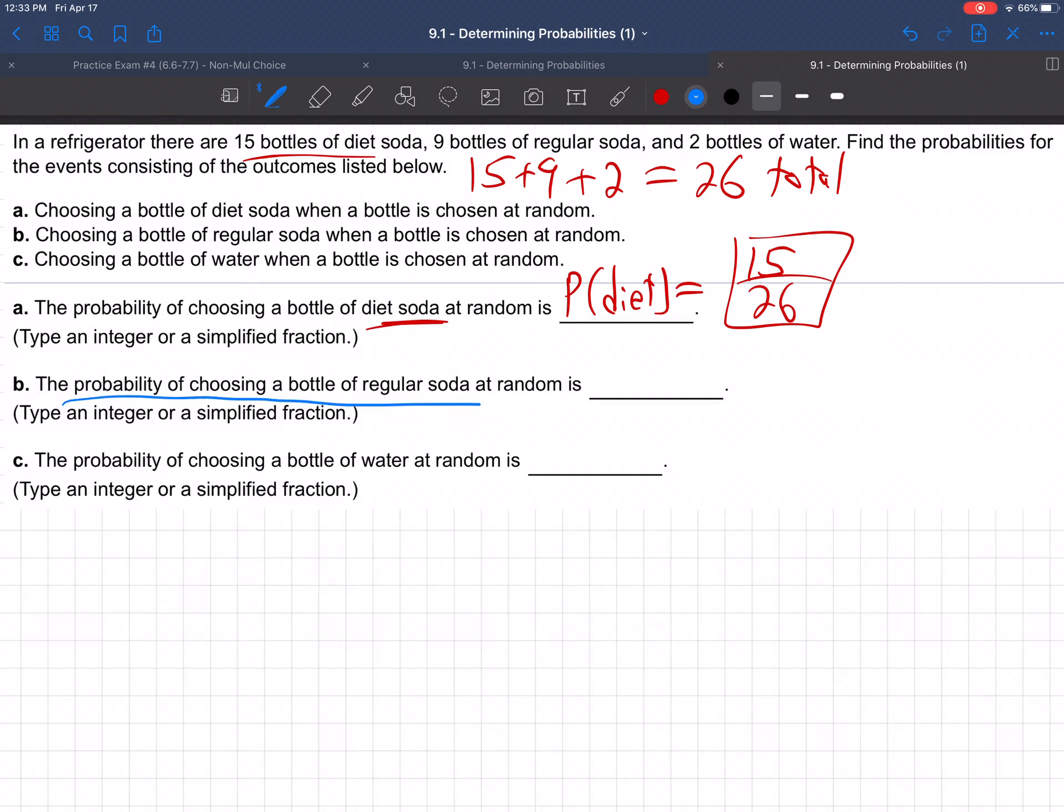Second one, the probability of choosing a bottle of regular soda. Regular soda, there it is, 9 bottles of regular soda is 9 over 26. Nothing more to that one.